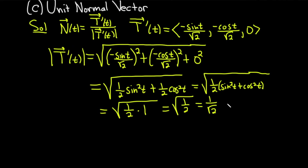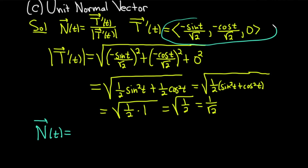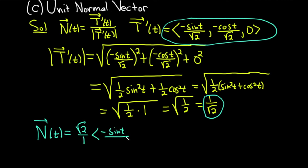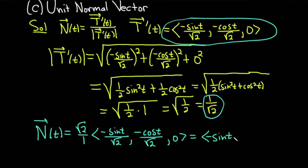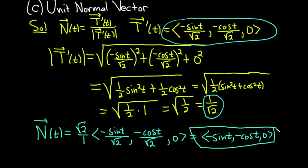Here's the cool part — something really nice happens. The unit normal vector N of t is T prime divided by the magnitude of T prime. We multiply by the reciprocal of 1 over root 2, which is root 2 over 1. Multiplying root 2 by T prime — where each component has a root 2 in the denominator — causes all the square root of 2s to cancel. We end up with the beautiful answer: N(t) = (negative sine t, negative cosine t, 0).